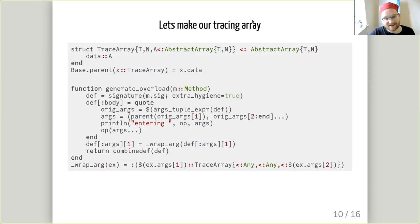How are we going to make this? We're going to declare a trace array. It's going to subtype abstract array. It's going to have a field which is an abstract array that we're going to delegate everything to. We're only going to define the parent function on it and the rest of the methods like size and getindex, we're going to generate those automatically.